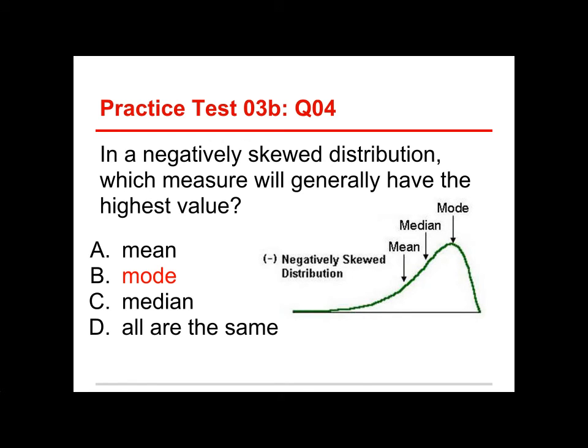Here we have a negatively skewed distribution. Most of the people are at the high end, but we have outliers and extreme scores that are far away from all the others on the left side, on the low end. And you see that the mean tends to get pulled in the direction of the outliers, the median a little bit, but the mode kind of stays put. And so the mode is going to be the farthest to the right, which gives it the highest value. The highest score. So the answer to this one is the mode.